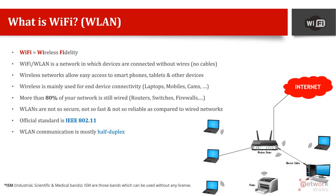What is wireless, or wireless LAN, or WLAN? Wi-Fi stands for wireless fidelity — you'll find this in some older literature, though some sources dispute it. Wi-Fi or WLAN is a network in which devices are connected without wires or cables, directly through an air interface — through radio signals — just like a mobile phone connects to cell towers without a data cable. This is called Wi-Fi, WLAN, or wireless local area network.